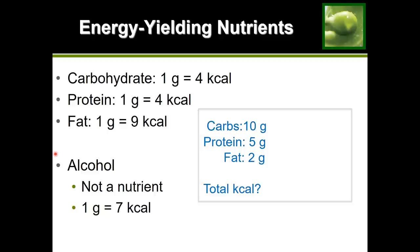Let's look at an example. A food product contains 10 grams of carbohydrates, 5 grams of protein, and 2 grams of fat. The question is: how many total calories does this food product provide? We need to convert grams to calories. For carbohydrates: each gram provides 4 calories, and we have 10 grams — so 10 × 4 = 40 calories of carbohydrates.